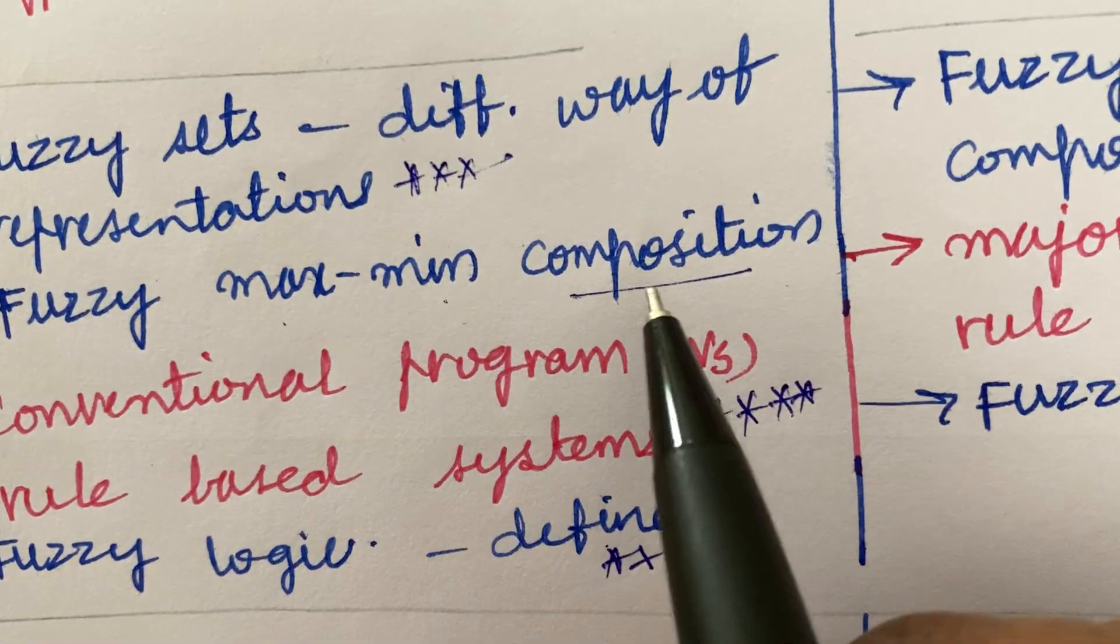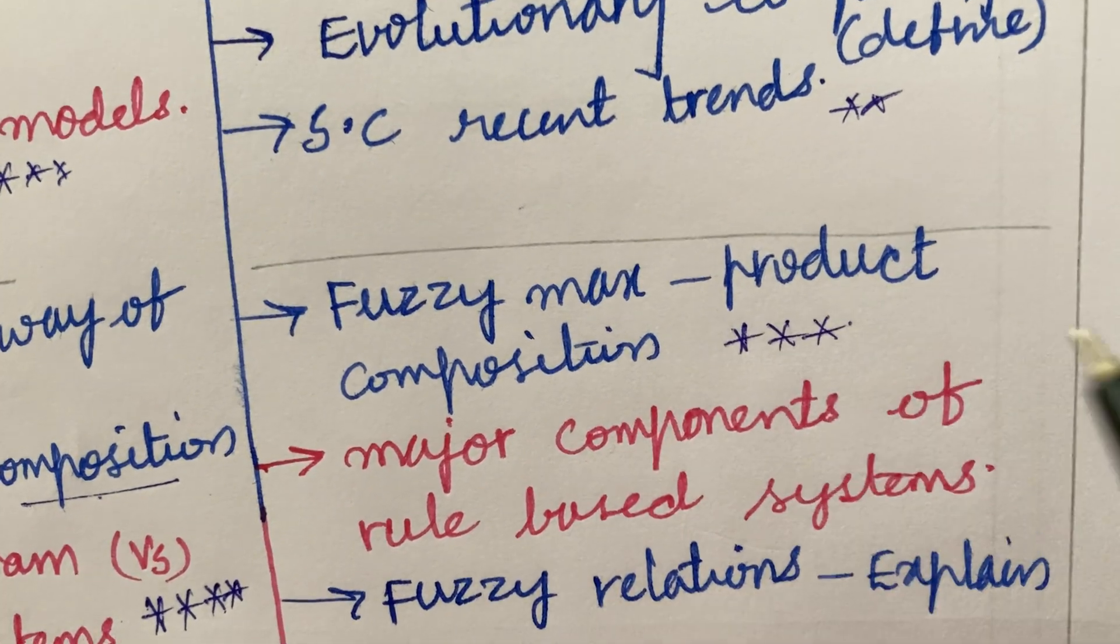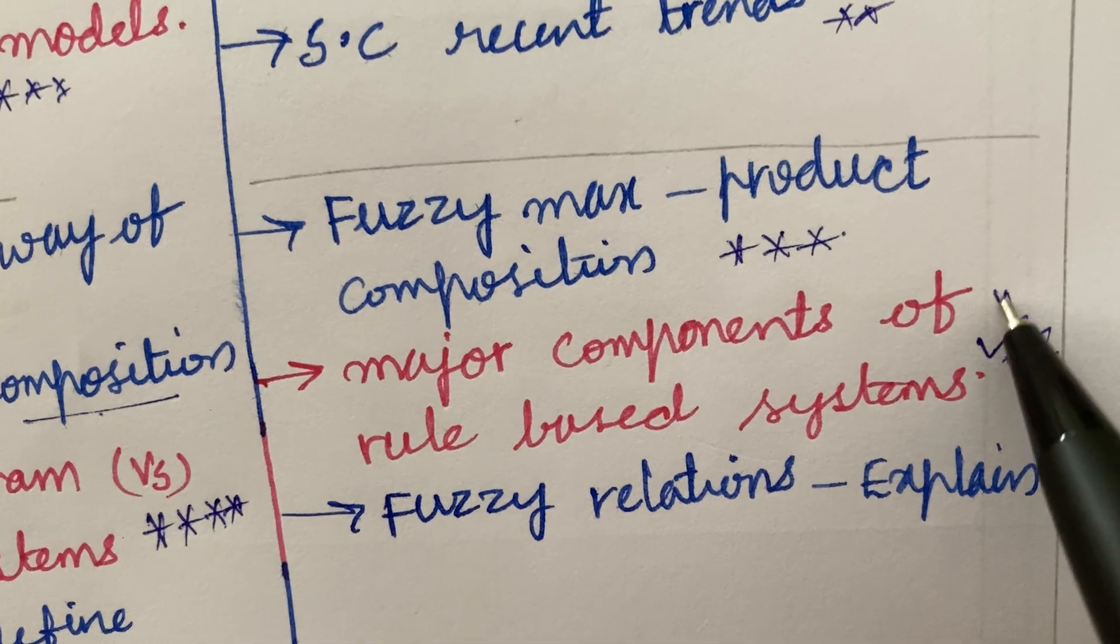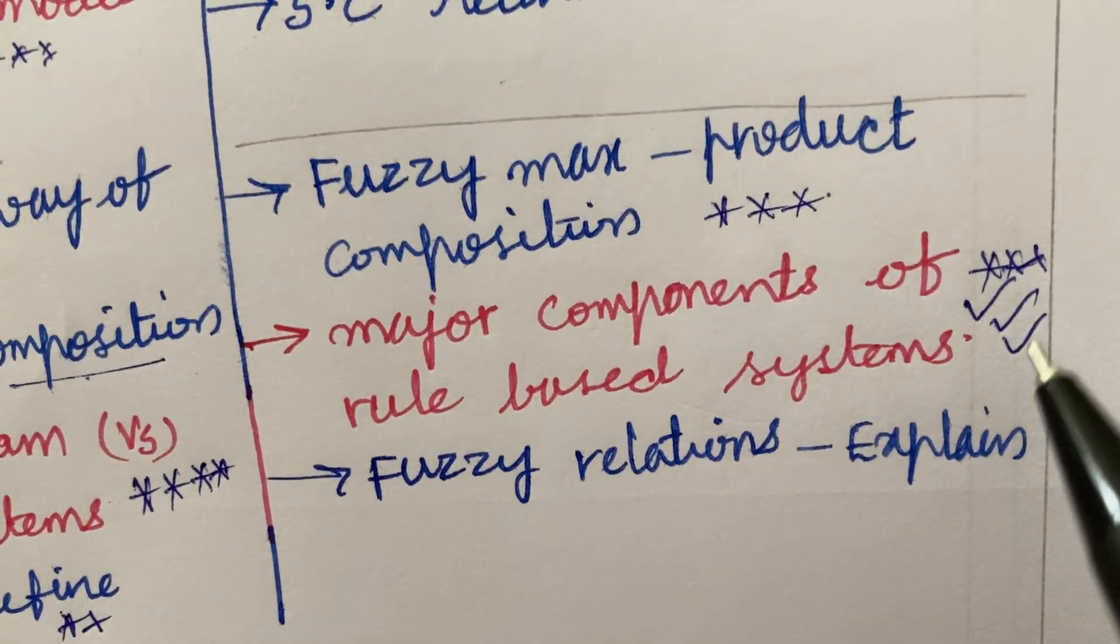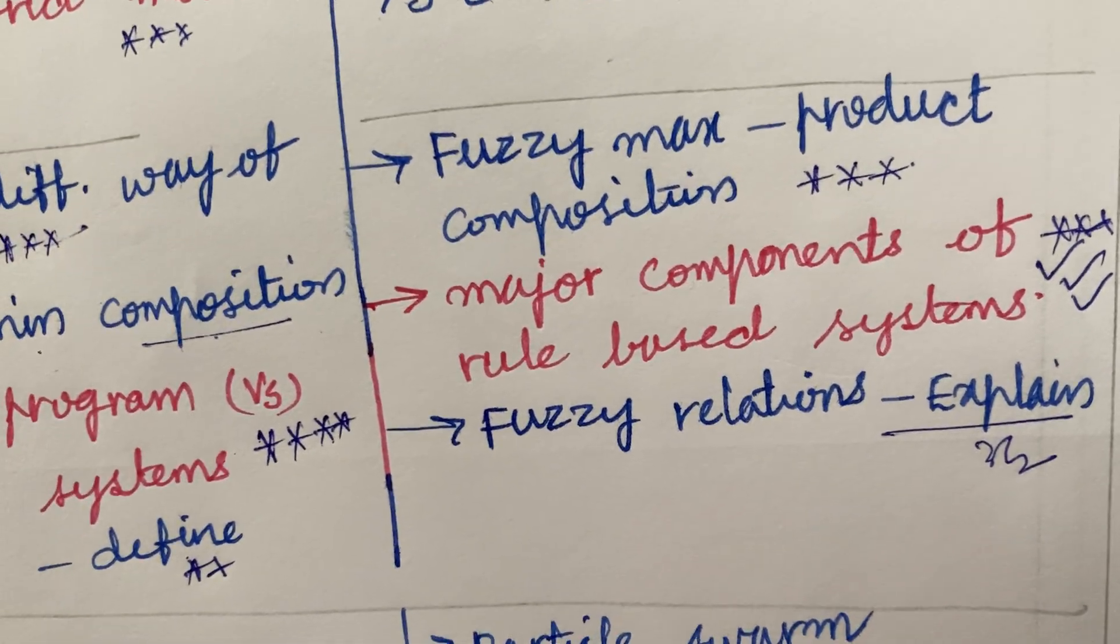Fuzzy max product composition. If you look here, max min composition versus max product composition may be also a direct 10 mark question. Major components of rule based system is also said to be a direct 10 mark question in the question paper and the fuzzy relations explain the term may be a 3 mark 2 mark question.